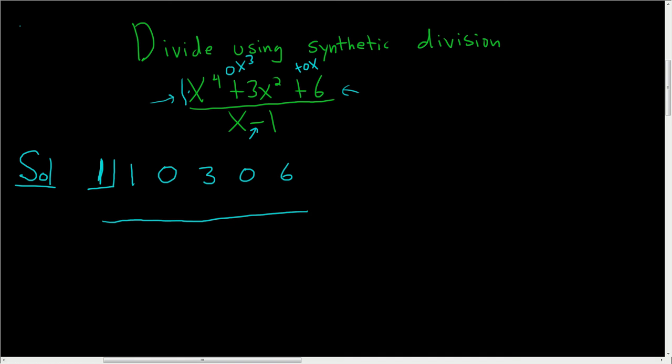The first thing you do now is you take this number and you write it down. So 1. 1 times 1 is 1, 0 plus 1 is 1. Again, 1 times 1 is 1, and then you add and you get 1. Then you do it again. 1 times 1 is 1, you add and you get 4. 4 times 1 is 4, then you add and you get 4. 4 times 1 is 4, and you add and you get 10.